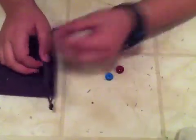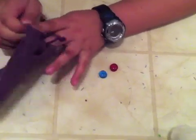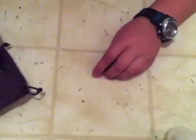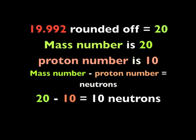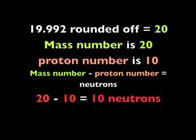First it says, put four blue shapes and one red shape in a cloth bag. If you pull out a blue shape, your atomic weight is 19.992 u, or atomic mass units. Once you have your atomic weight, you can round that up or down to get your mass number.